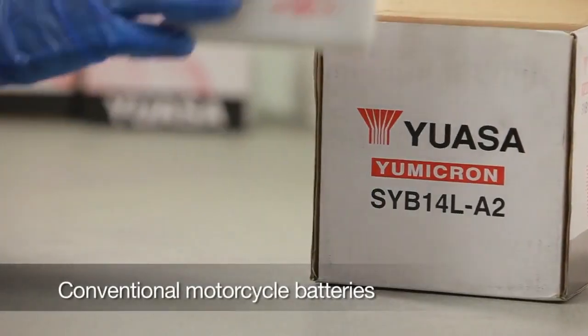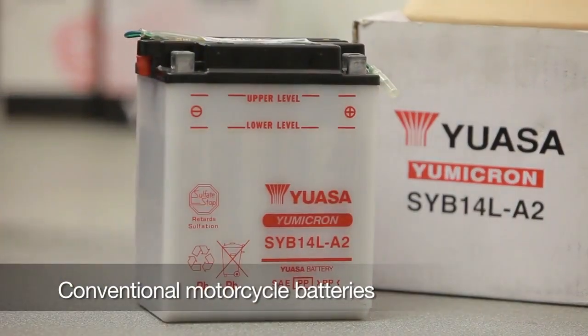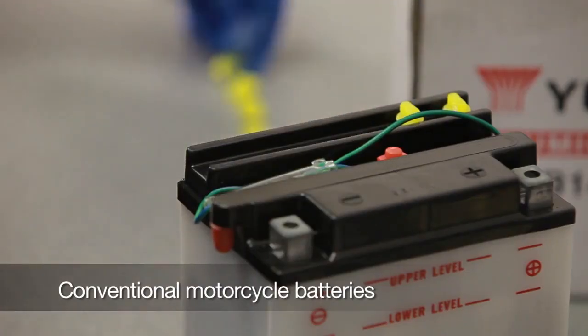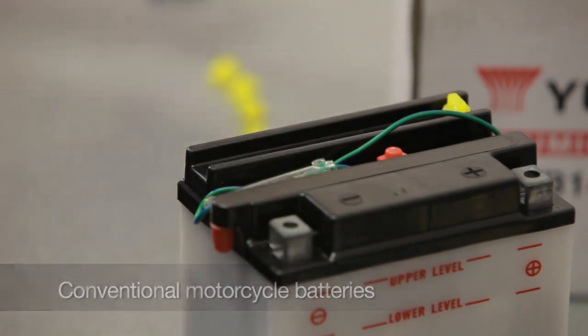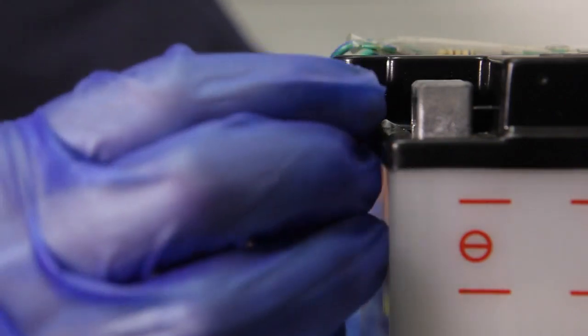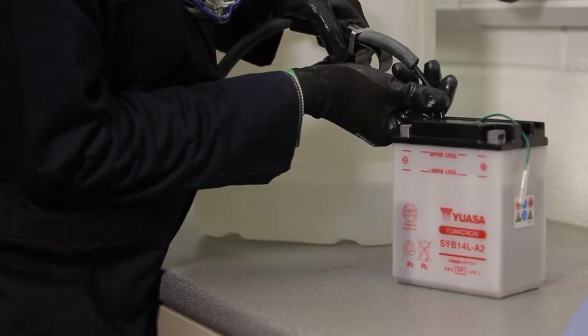To charge a conventional battery, place it on a level surface, then remove the filler caps, placing them safely to one side. Remove the sealing cap from the vent and throw it away. Never replace this after the battery has been filled with electrolyte as it may cause the battery to rupture.